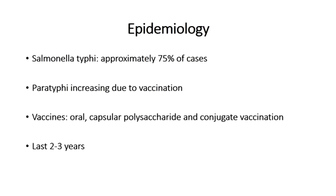There are a number of vaccines available for Salmonella typhi. There is a live oral vaccination and a capsular polysaccharide vaccination that both have an efficacy of about 50 to 80%. A newer conjugate vaccine has a greater efficacy of about 90%. Typically, these vaccinations are required every two to three years.